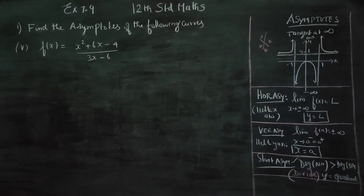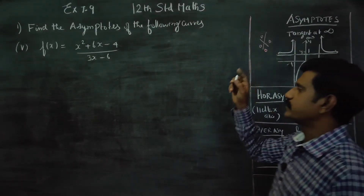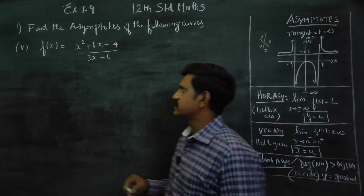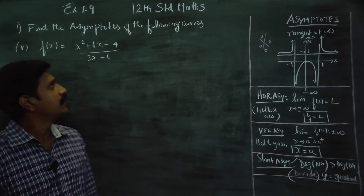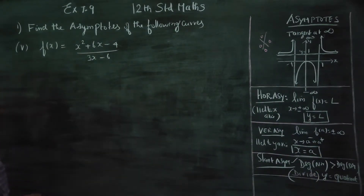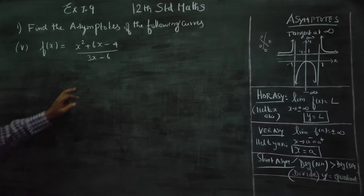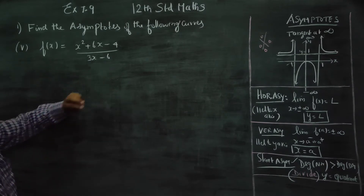Dear 12th standard students, in exercise number 7.9, find the asymptote of the following curves. f(x) is equal to (x² + 6x - 4) / (3x - 6).